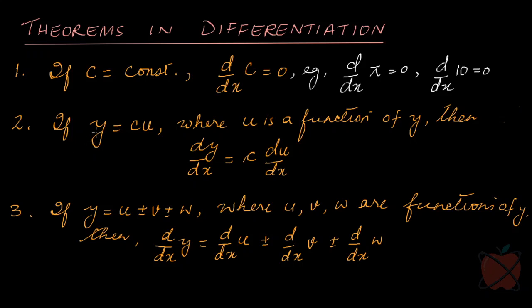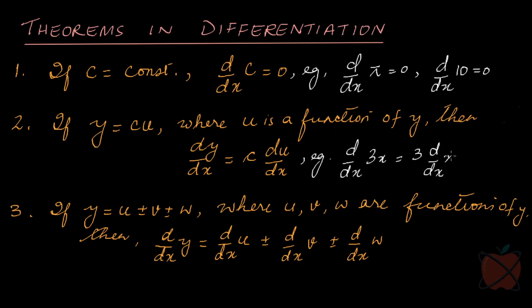The second theorem says that if y = c·u, where c is a constant and u is a function, then when you differentiate d/dx of y, the constant will come in front — you don't differentiate a constant. So it becomes c · d/dx of u. For example, d/dx of 3x: the 3 comes in front, then d/dx of x, and d/dx of x equals 1, so this equals 3.